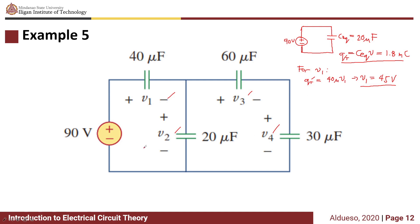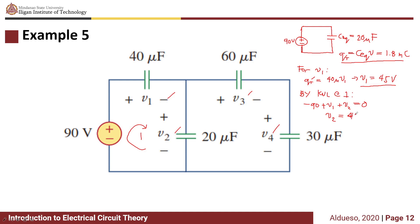Now we can get the value of V2 using KVL. By KVL at loop 1, we have negative 90 plus V1 plus V2 equals 0. So V2 is equivalent to 45 volts.